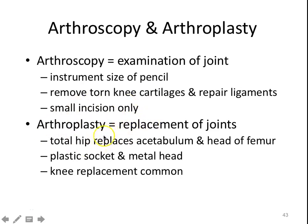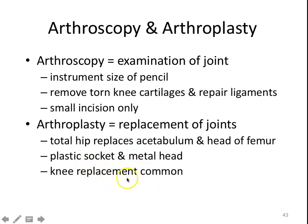Sometimes you'll have to totally replace a joint — either a partial or total hip replacement. In a total hip replacement, you replace the acetabulum as well as the head of the femur. In a partial hip replacement, it's one or the other. You usually have a plastic socket and a metal head. Knee replacements are also fairly common — with metal and Teflon or plastic pieces, or sometimes partial knee replacements, full knee replacements, and sometimes parts may even come from a cadaver.